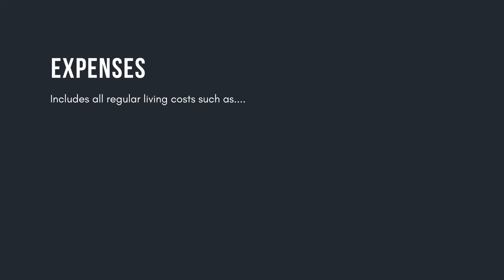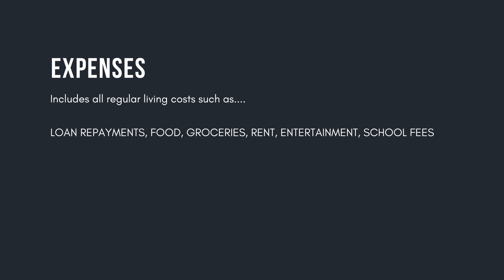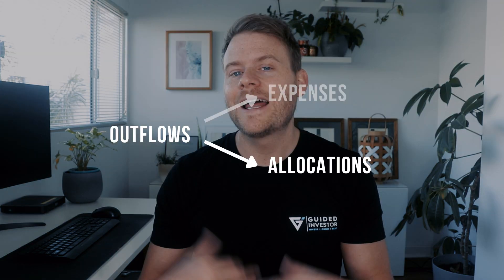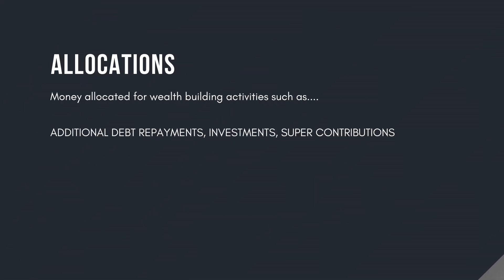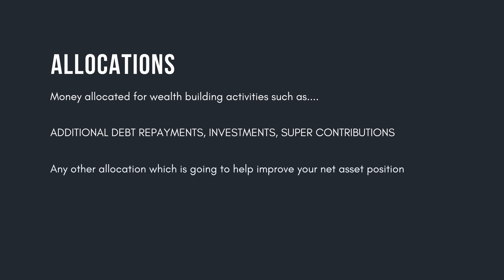The expenses which come out of your transaction account include loan repayments, food, groceries, rent, entertainment, school fees and any other regular or small expense which pops up. Also coming out of your transaction account are your allocations - any money that's purposely allocated for wealth building exercises, for example additional loan repayments, investments, super contributions. If you intend to put an extra $200 per week towards your mortgage or invest $1,000 per month into an investment portfolio, those amounts come out of your transaction account.